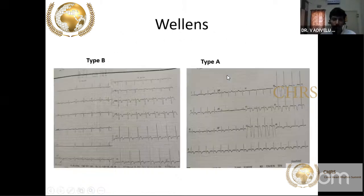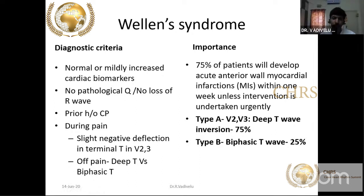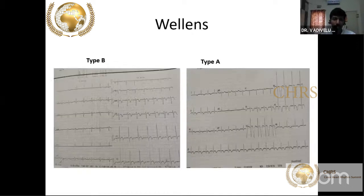The most important thing in Wellens syndrome: during pain, the ECG may be normal and T inversions may disappear. Whereas when the patient is pain-free, T inversion will be present. This dynamic change in T wave inversion, along with ischemia symptoms, is very significant — echo may be normal and troponin may be negative in this patient.